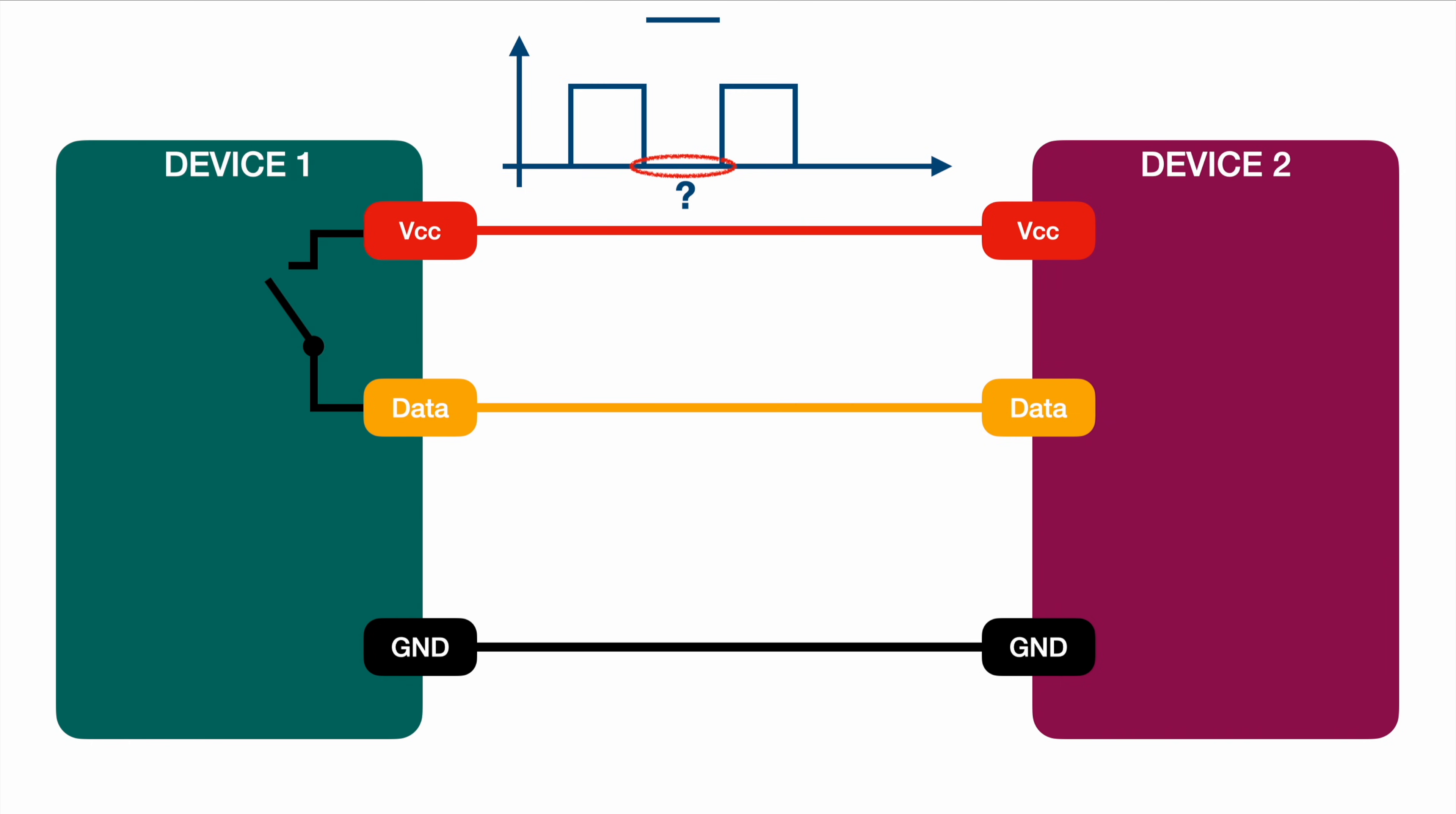So what we have to do is pull down this voltage level to the low level. To do so, we will connect or introduce a resistor between data and ground, the pull-down resistor. So the name makes actually a lot of sense because this resistor will pull down this logic level to low, to zero, to ground.